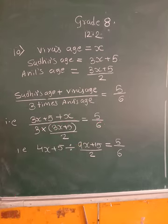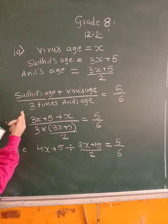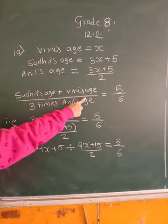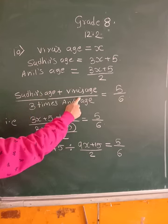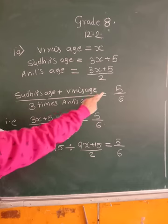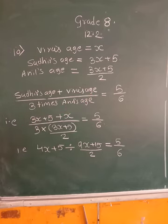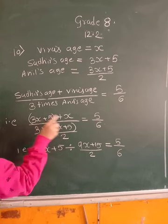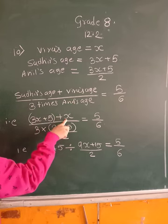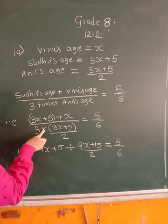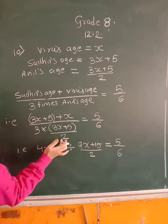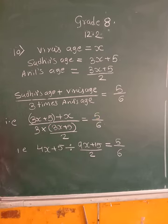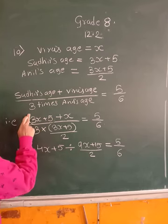Listen very carefully. If the ratio of sum of Sudhir's and Viro's age to 3 times Anil's age is 5 upon 6, we just have to substitute. Sudhir's age is 3X plus 5, to that we are adding Viro's age which is X, divided by 3 times Anil's age which is 3X plus 5 upon 2. This ratio equals 5 upon 6. Now see, 3X if I open this bracket, 3X plus 1X is 4X plus 5.